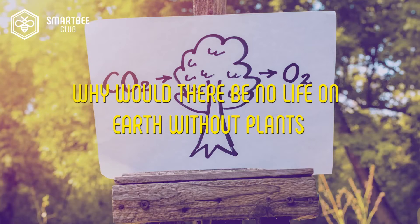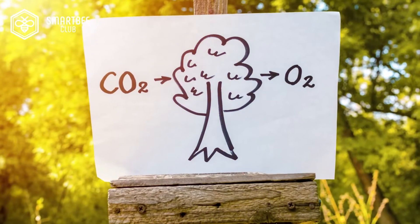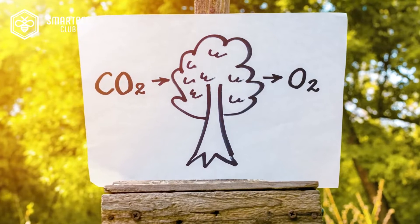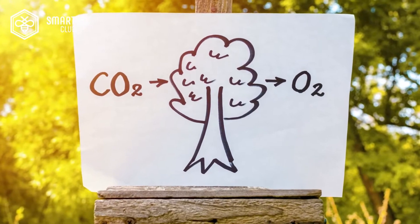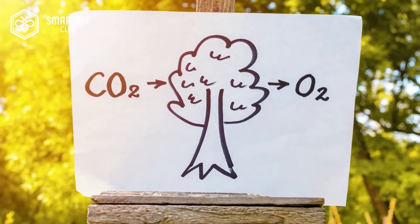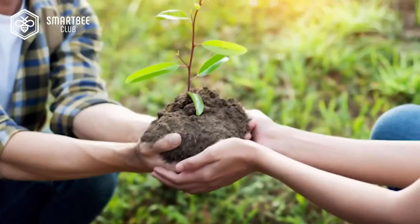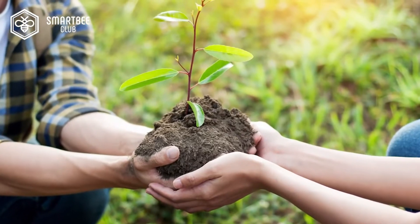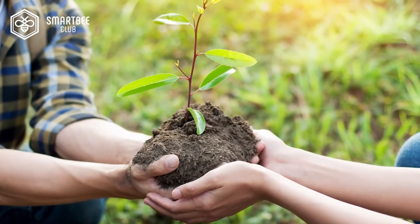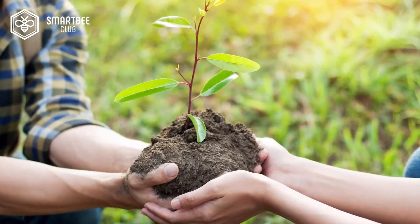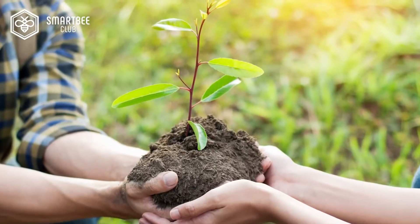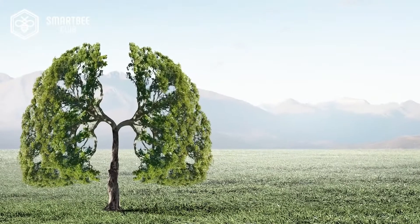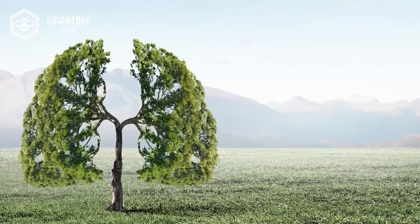Why would there be no life on Earth without plants? Exchange of carbon dioxide and water into oxygen and glucose is possible thanks to the process of photosynthesis. Plants are the basis of life on Earth. Without them, most of the life forms wouldn't be able to exist, including humans and animals.